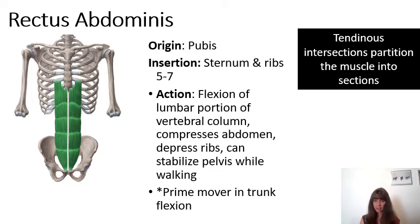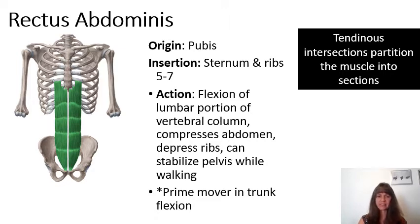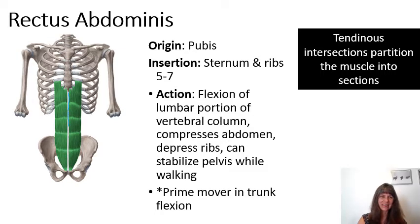Rectus abdominis is considered a prime mover in trunk flexion. Do you remember the other name for a prime mover? That's right — it's called an agonist. You'll notice that the rectus abdominis contains tendinous intersections that partition the muscle into sections, which is what creates the appearance of a six-pack in people with a very well-defined rectus abdominis. You'll also notice a very well-defined white line running down the center, which is the linea alba.